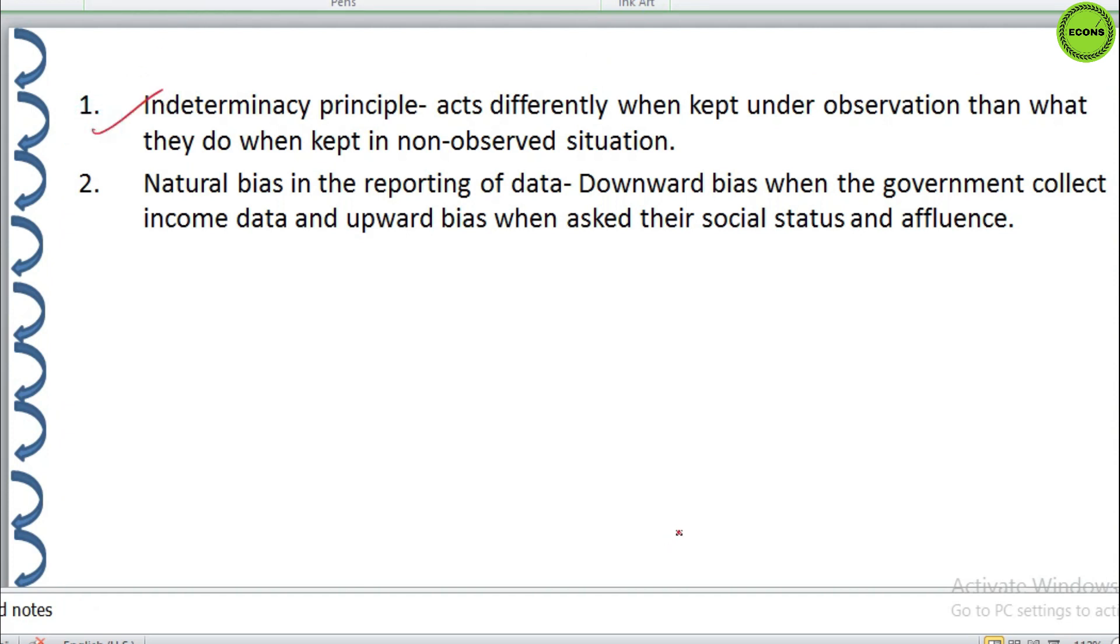Next point is indeterminacy principle. Sometimes we find that individuals act differently when kept under observation than what they do when they kept in non-observed situation. For example, if workers are aware that somebody is observing them in course of a work study on the basis of which the average length of time to complete a task will be determined and accordingly the quota will be set for piece of work, they generally tend to work slowly in comparison to the speed with which they work if kept unobserved so that they may get less work of quota.